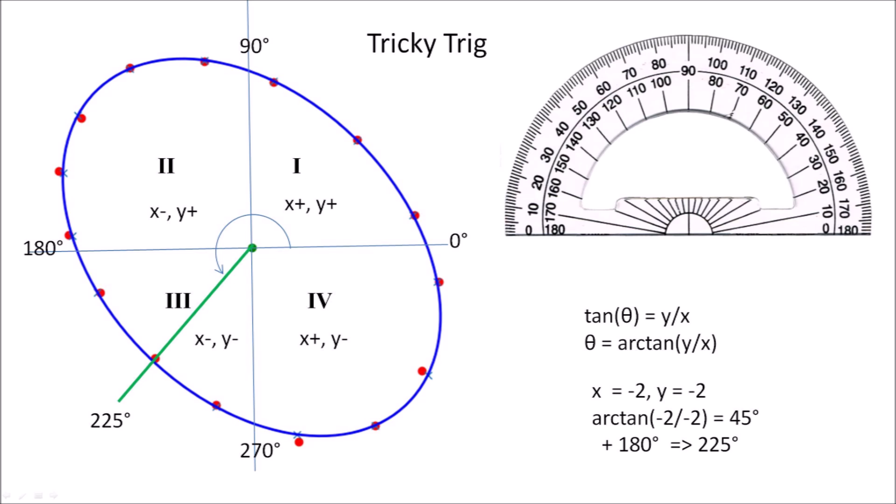As you can see in this example, the angle obtained by the arctan function for a point in the third quadrant is the same as the angle for the first quadrant. To get the correct value, I had to add 180 degrees when the point was in the third quadrant.